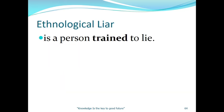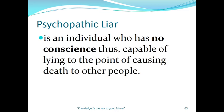The ethnological liar is a person trained to lie. On the law enforcement side, this is commonly your intelligence group — they may be trained to lie for the good of the government. The psychopathic liar is an individual who has no conscience and is capable of lying to the point of causing even the death of other people, with no regard for consequences.